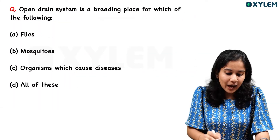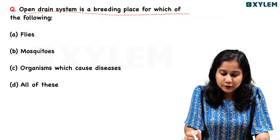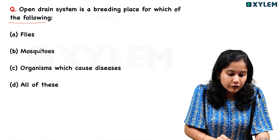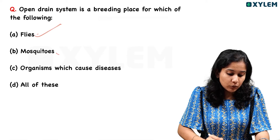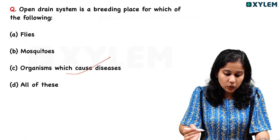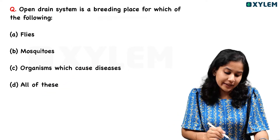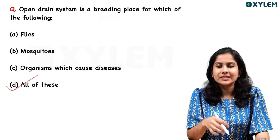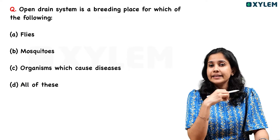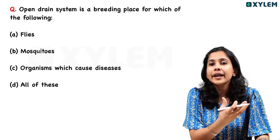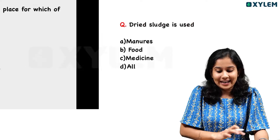Next question: open drain system is a breeding place for which of the following — flies, mosquitoes, organisms which cause diseases, or all of these? The answer is all of these.